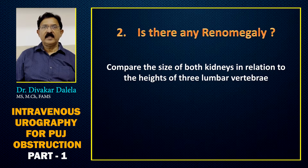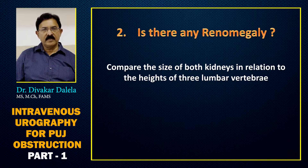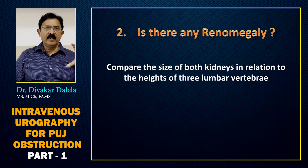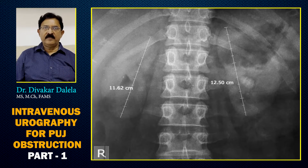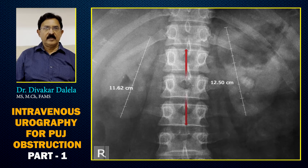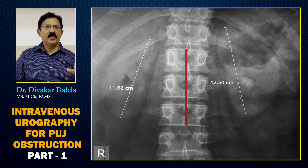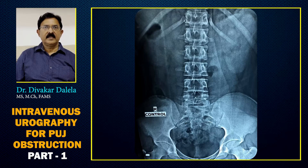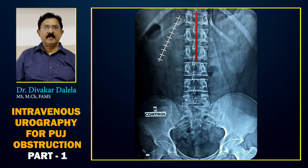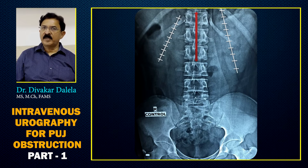The next thing you should see is renomegaly. To make an impression, you compare both kidneys first, then compare the size of a kidney with the height of three lumbar vertebrae. The length of the kidney should be almost equal to three vertebral bodies. In this case, measuring the height of three vertebral bodies shows the right kidney is normal, but the left kidney shadow is noticeably bigger — that is how you make an impression about renomegaly.